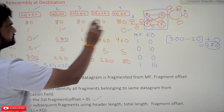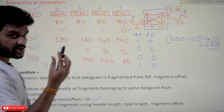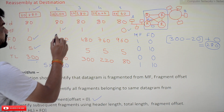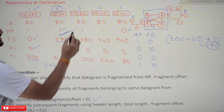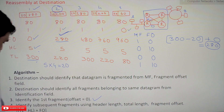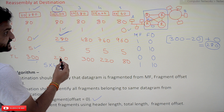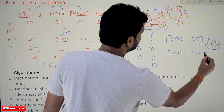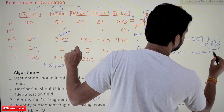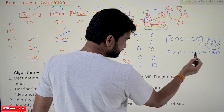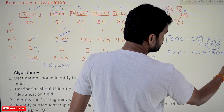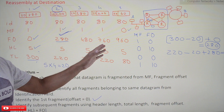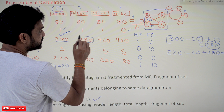From all the fragments that have arrived, we identify the packet with fragment offset 280 — that is going to be the second packet. Then repeat the algorithm: total length here is 220, minus header length of 20, plus offset of 280, which equals 480. So we identify the fragment with offset 480 as the third packet.